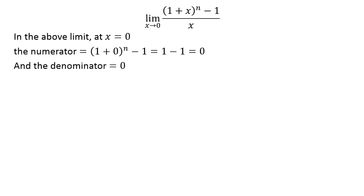In the above limit, as x equals 0, the numerator is equal to (1 + 0)^n - 1 = 1 - 1 = 0 and the denominator is also 0. The above fact implies that the limit is in 0/0 indeterminate form.